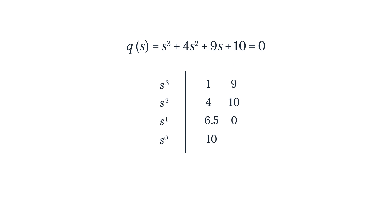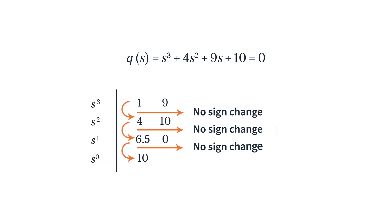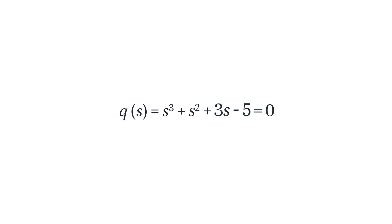Looking at the array, we can see that all the elements of the first column are positive, so there are no sign changes and we can confidently confirm that the system is stable. This is very simple yet there are a lot of things going on. As long as you write everything down correctly and don't make any transcription errors, you should arrive at this array easily.